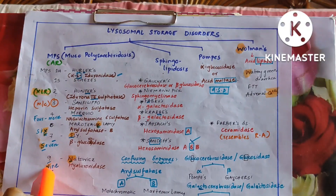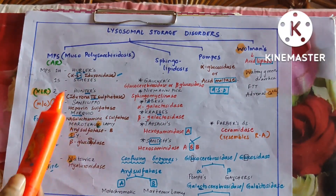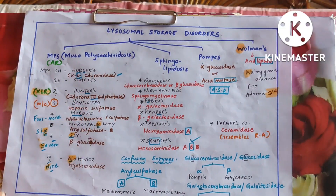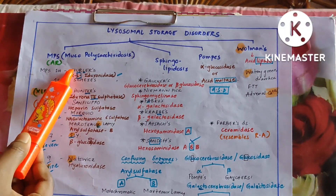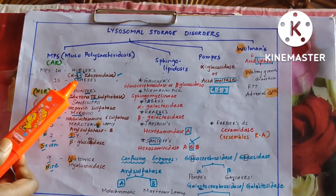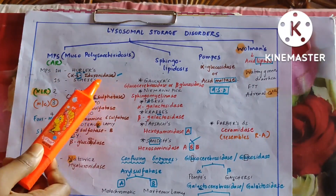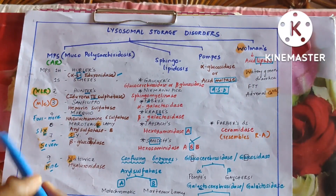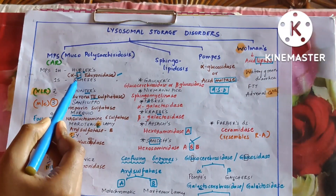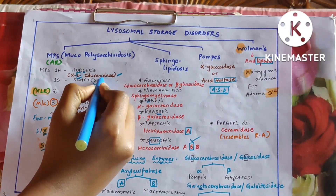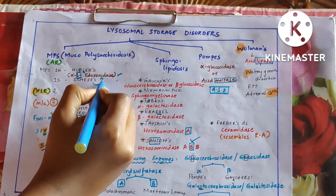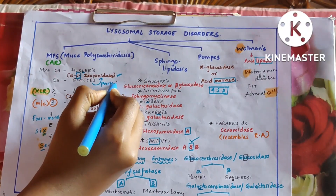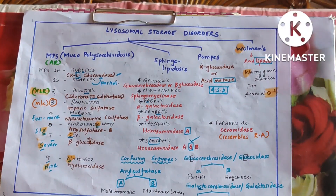All these names you have to remember in the same order along with the numbers, because sometimes they give you only MPS type 3 in the options without giving Sanfilippo disease. So you need to learn them in order. Coming to the enzymes: alpha-L-iduronidase — L for Hurler — and Scheie's disease is partial deficiency of alpha-L-iduronidase.